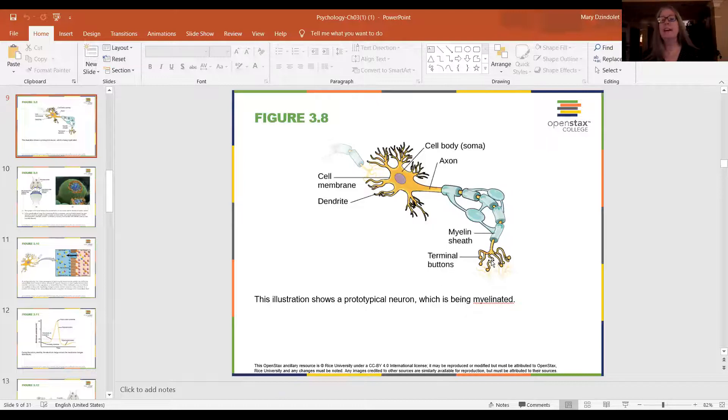At the very end of the neuron are these terminal buttons. The terminal buttons actually have in them these little vesicles, little vessels that hold neurotransmitters. And neurotransmitters are chemicals. When neurons communicate with one another, we call it an electrochemical process. We call it electrical because there's actually an electrical current that makes the neuron fire. But if it fires, then out of these terminal buttons will come some neurotransmitters.